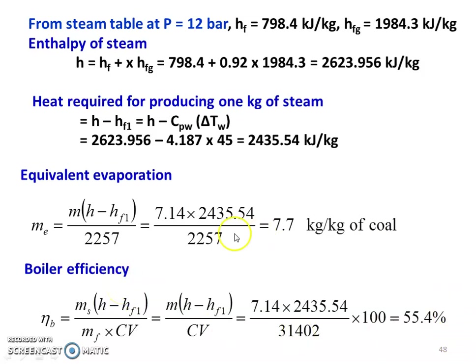The answers to Example 8: equivalent evaporation is 7.7 kg per kg of coal, and boiler efficiency is 55.4%.